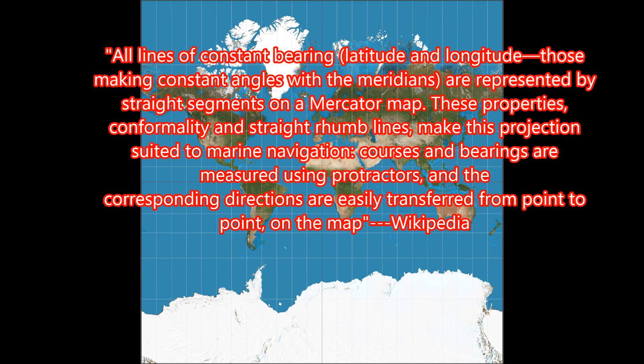All lines of constant bearing are represented by straight segments on a Mercator map. These properties — conformality and straight rhumb lines — make this projection suited for marine navigation. Courses and bearings are measured using protractors, and the corresponding directions are easily transferred from point to point on the map.